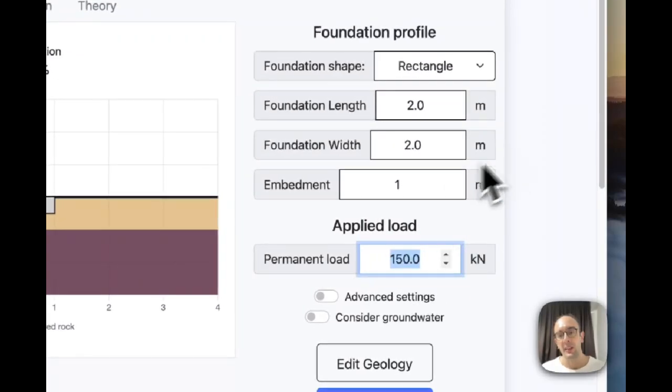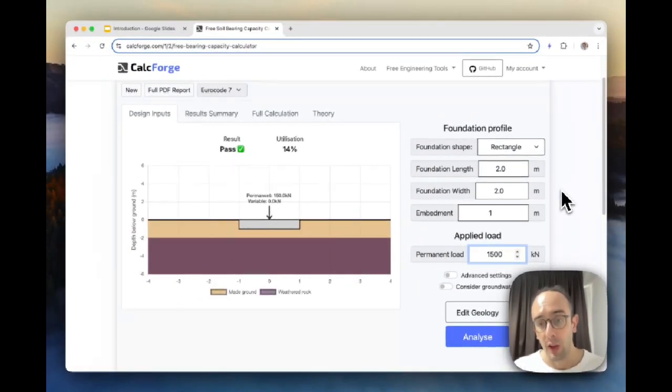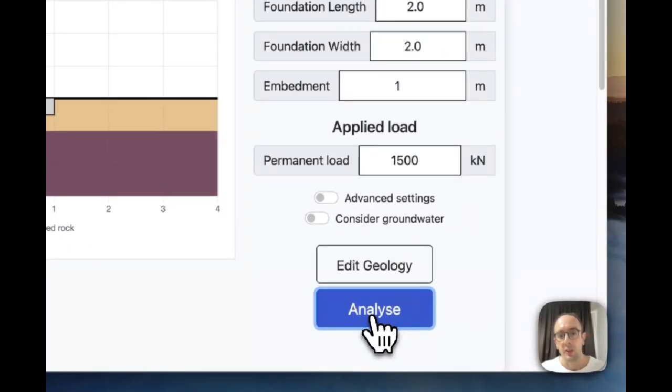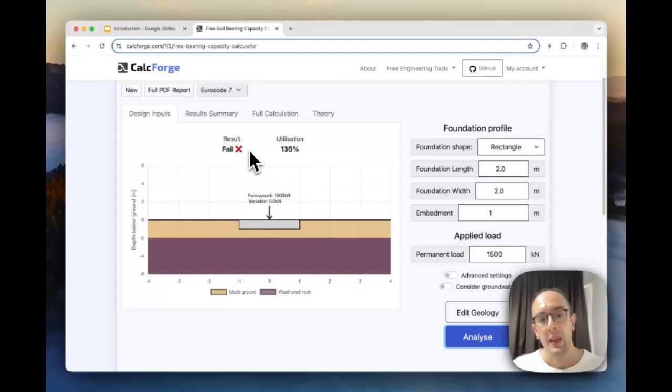You can also change the load here, so let's say I just want to change the permanent load, so I want to make this 1500, increasing it by 10. I can do that and I can rerun the analysis.